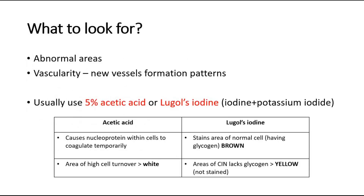After explaining the procedure, what are we supposed to look for during colposcopy? We look for any abnormal areas of the cervix, any vascularity which is new vessel formation, and patterns known to be associated with pre-malignant and malignant lesions of the cervix. We usually use two solutions: 5% acetic acid and Lugol's iodine.